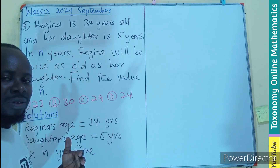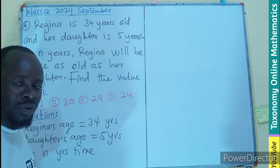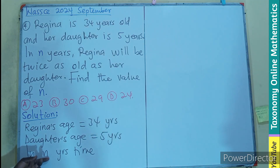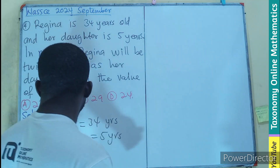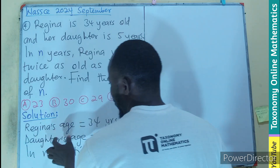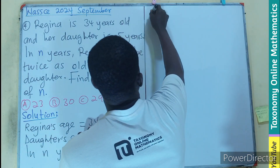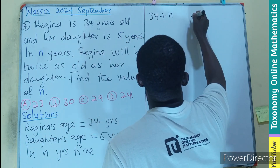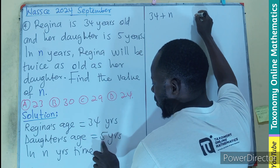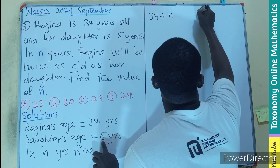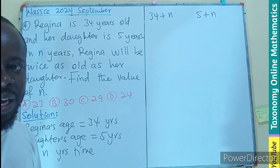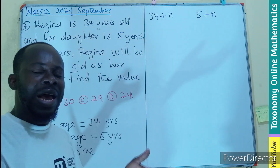We add the two years to what their ages were now. Since we don't know what those years will be, we use n. That simply means Regina's age will become 34 plus n, and the daughter's age will also become five plus n. That is what it will mean in n years to come.